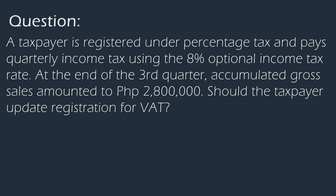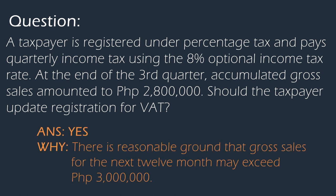For example, a taxpayer is registered under percentage tax and pays quarterly income tax using the 8% optional income tax rate. At the end of the quarter, accumulated gross sales amounted to 2.8 million. The question is, should the taxpayer update the business registration to VAT? The taxpayer should update from percentage tax to VAT, as gross sales in the third quarter are already 2.8 million, so there is reasonable ground that by 12 months, sales would reach the VAT threshold of 3 million or more.